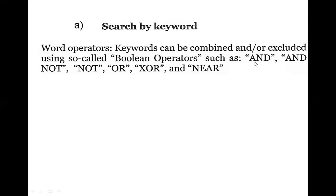We are going to use the understanding of keywords so that we can extract the correct documents in a specified time. Otherwise it will lead to a longer duration and take more time. The second keyword operator is AND NOT. In this case, we are going to use a document which has both the word 'tennis' but not the word 'ball'.